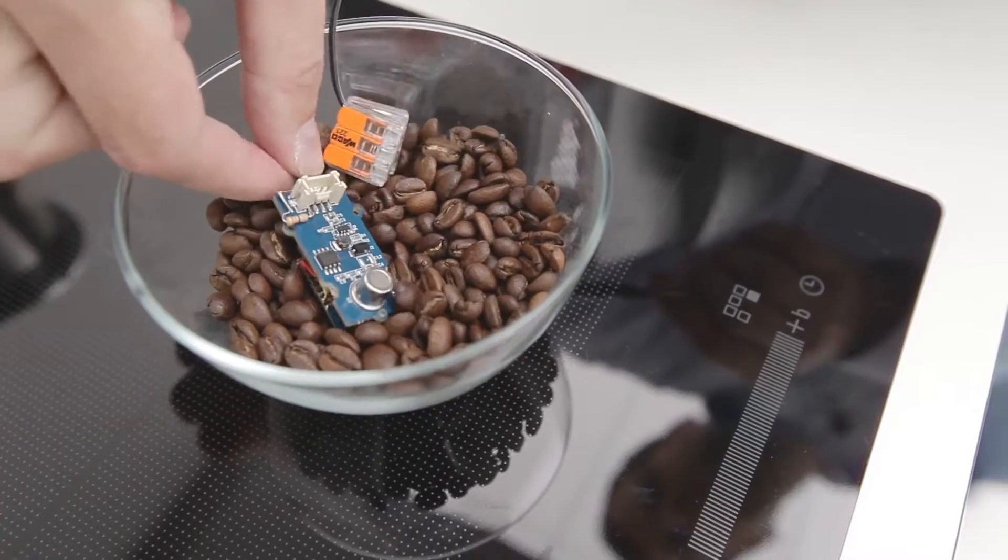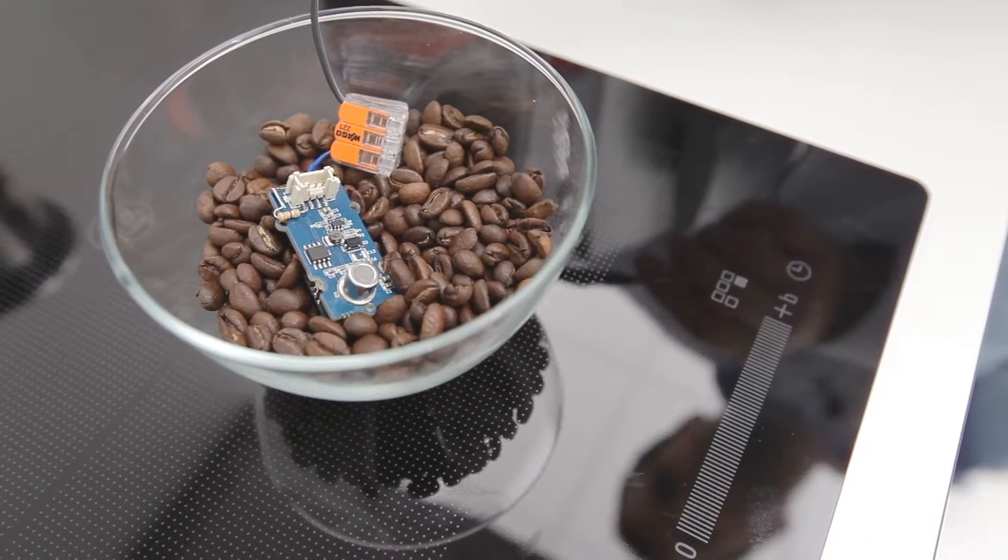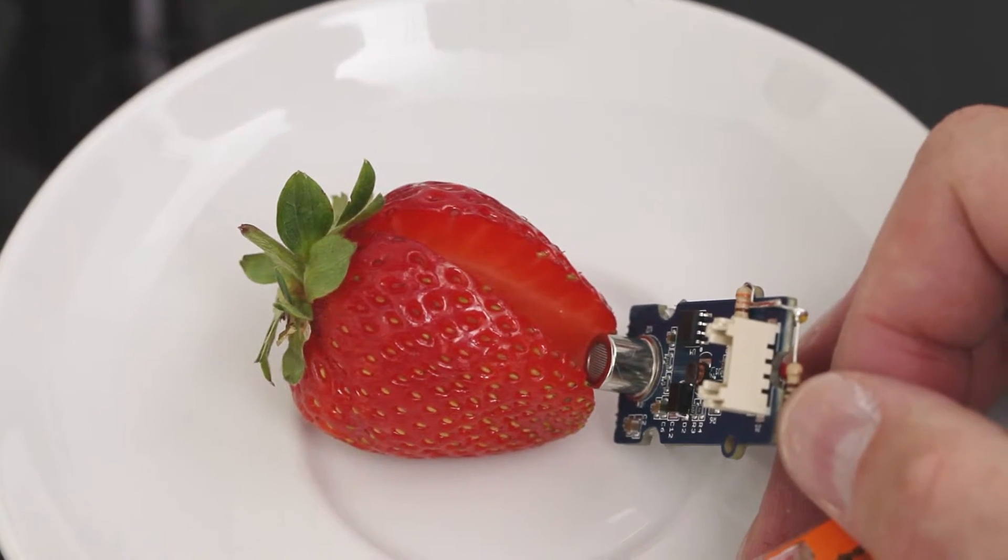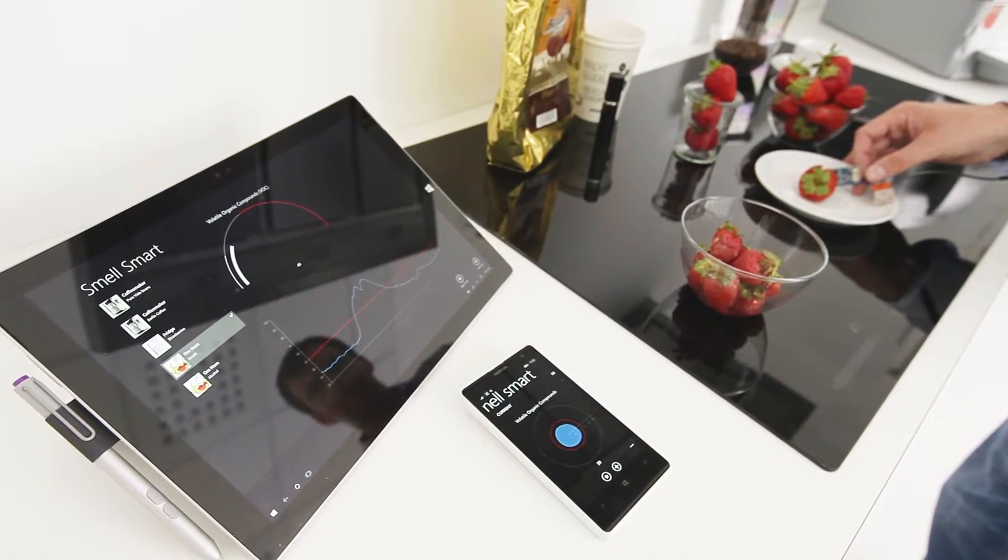The question was, is the food I use in the kitchen still fresh? We had a look at two scenarios. The first scenario was the coffee bean. Is the coffee still fresh? The second scenario was the strawberry. Is the strawberry still nice and fresh?